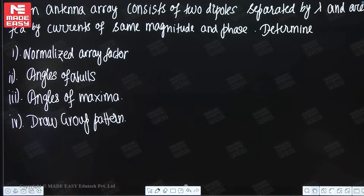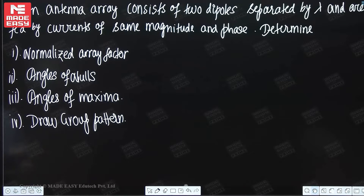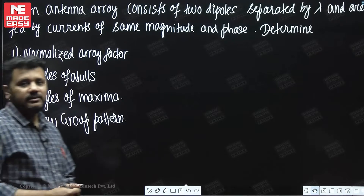The question is: an antenna array consists of 2 dipoles separated by lambda and are fed by currents of same magnitude and phase. Determine the normalized array factor, angles of nulls, angles of maxima, and draw the group pattern.